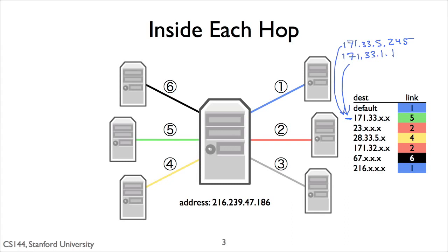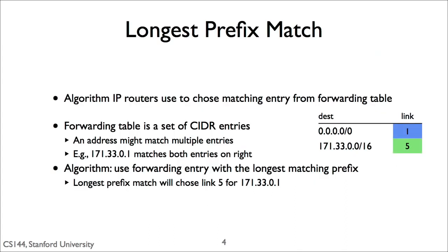If when a packet arrives there isn't a more specific route than the default route, the router will just use the default one. Longest prefix match, or LPM, is the algorithm IP routers use to decide how to forward a packet.